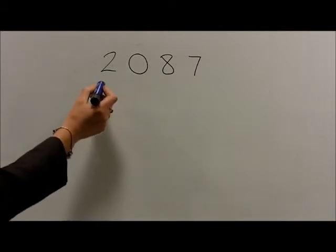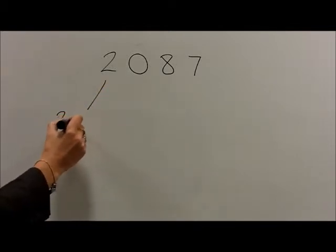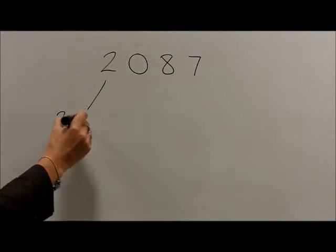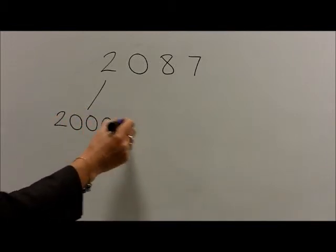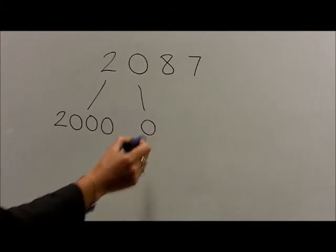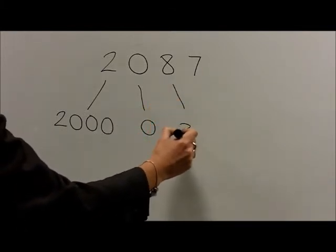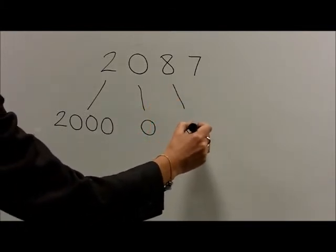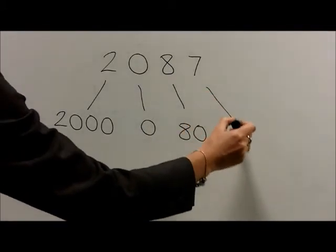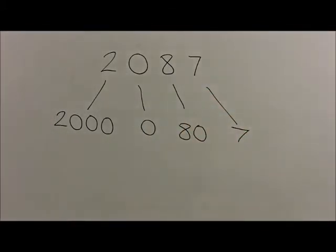With the number 2,087, when this is partitioned, we have the 2,000s which gives us 2,000. There are no hundreds, so we write this as 0. There are 8 tens which are 80, and then finally 7 units which gives us 7.